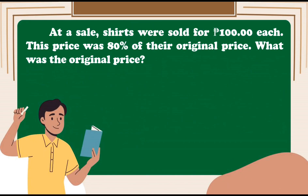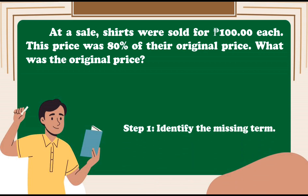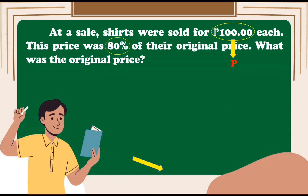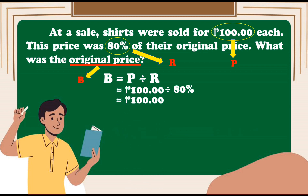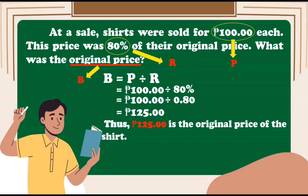Let us solve the last example. At a sale, shirts were sold for 100 pesos each. This price was 80% of the original price. What was the original price? Step 1: identify the missing term — 100 pesos is the percentage, 80% is the rate, so the unknown is the base. Step 2: write the formula — Base is equal to percentage divided by rate: 100 pesos divided by 80%. Step 3: change the percent to decimal — 100 pesos divided by 0.80. The answer is 125 pesos. Thus, 125 pesos is the original price of the shirt.